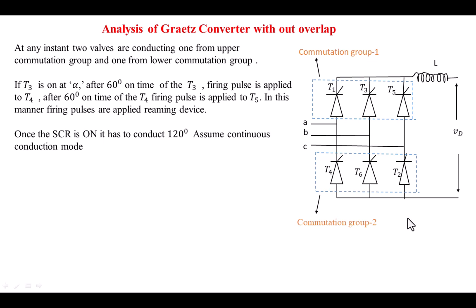We are assuming that T3 is on at a firing angle alpha. After 60 degrees of T3 being on, we apply the triggering pulse to T4. After 60 degrees of T4 being on, we apply the triggering voltage to T5. After another 60 degrees we give a triggering voltage to T6, and after 60 degrees again we give a triggering voltage to T1. After 60 more degrees, we give the triggering pulse to T2.